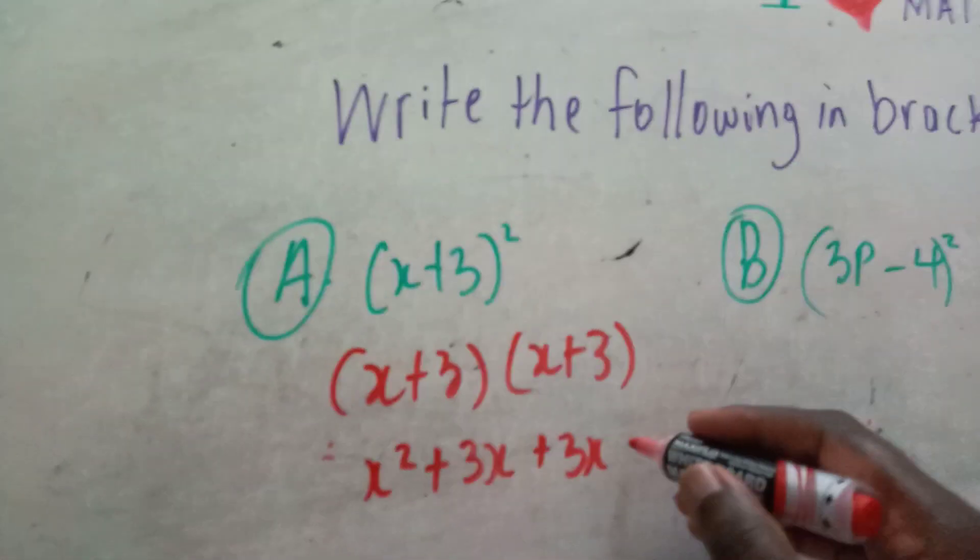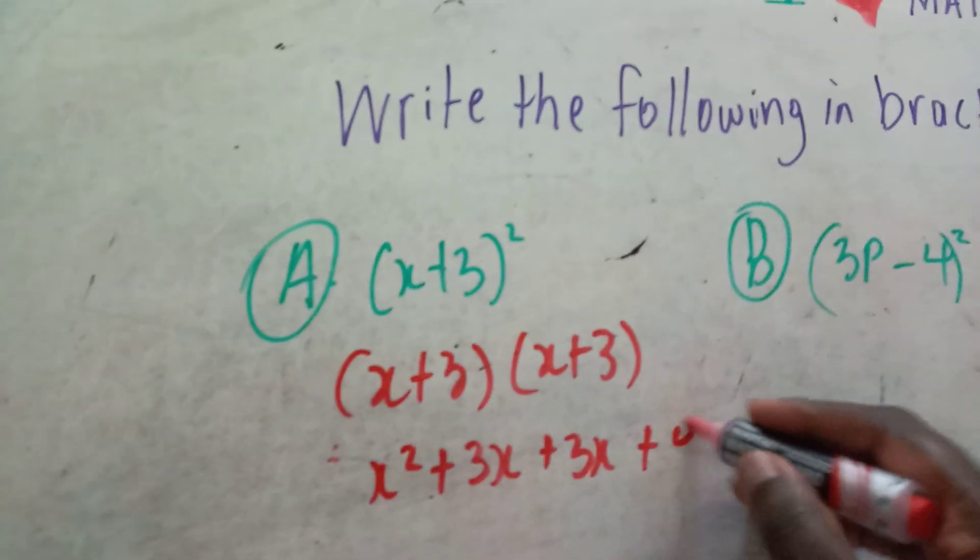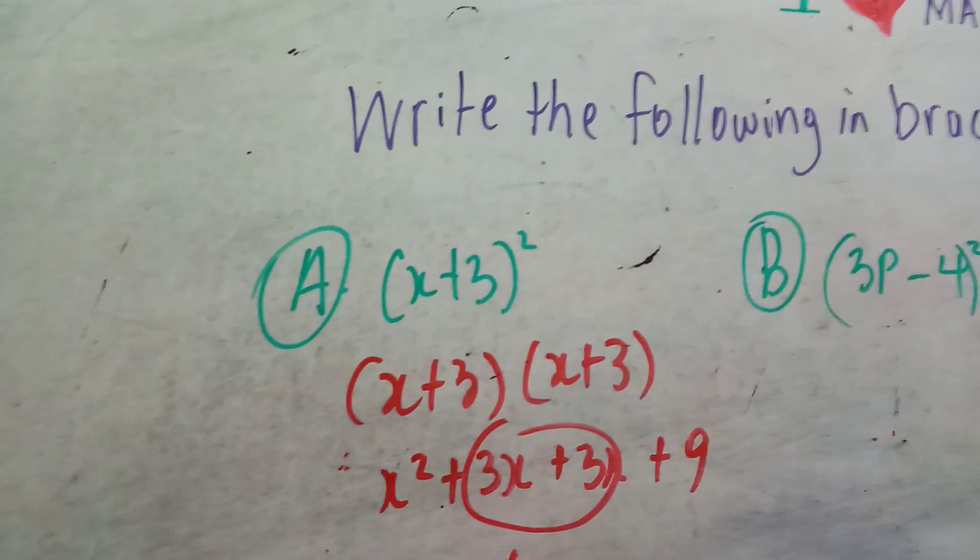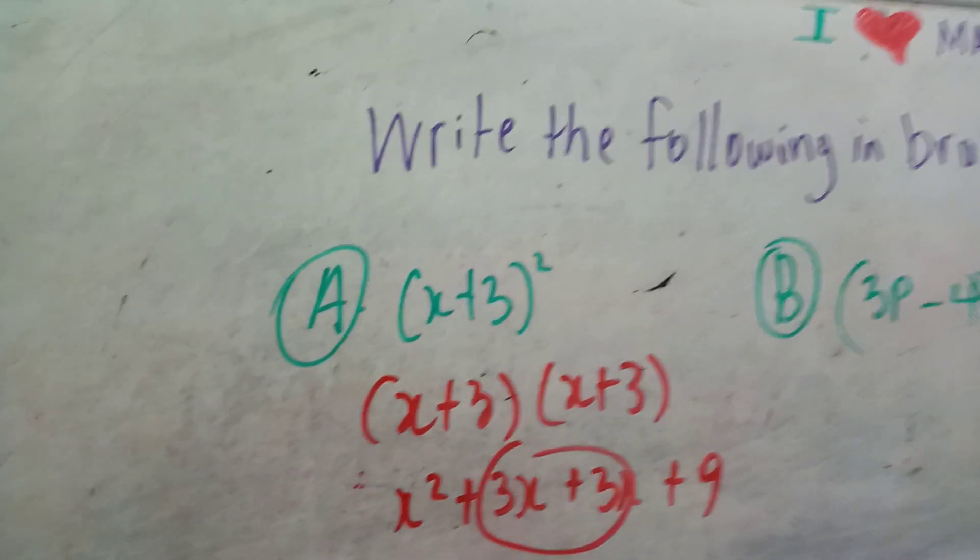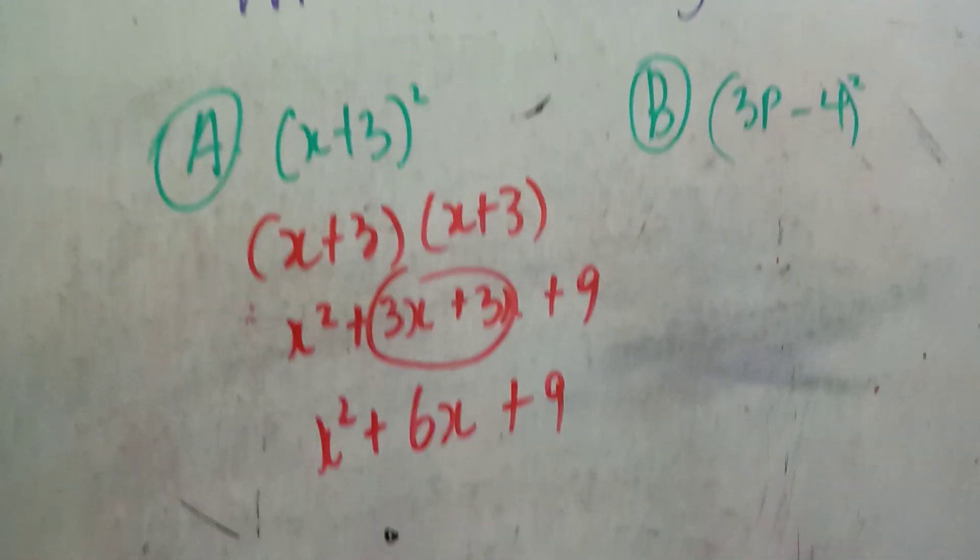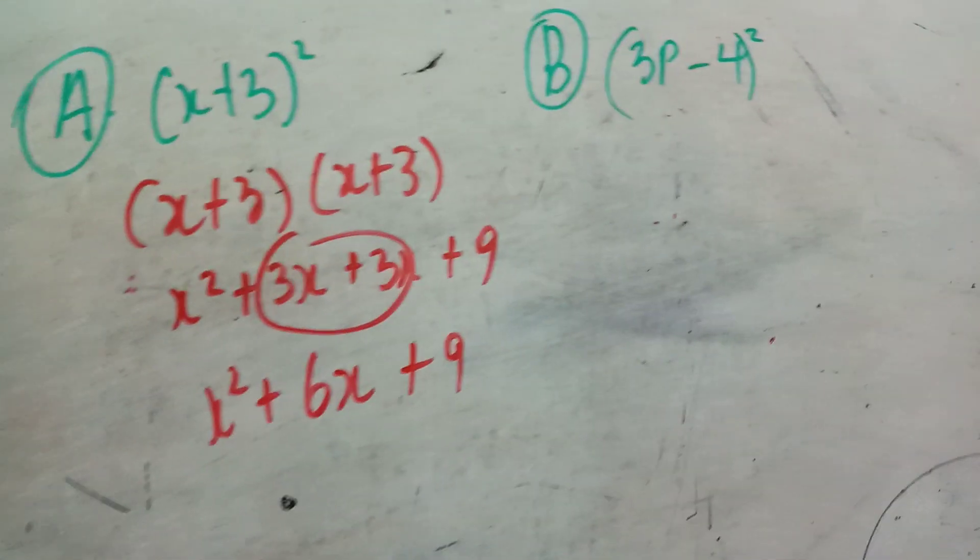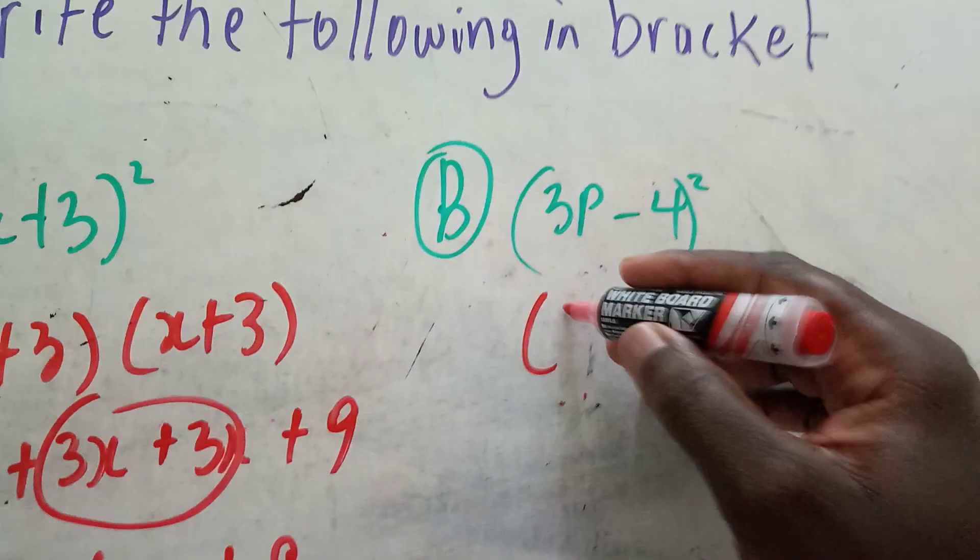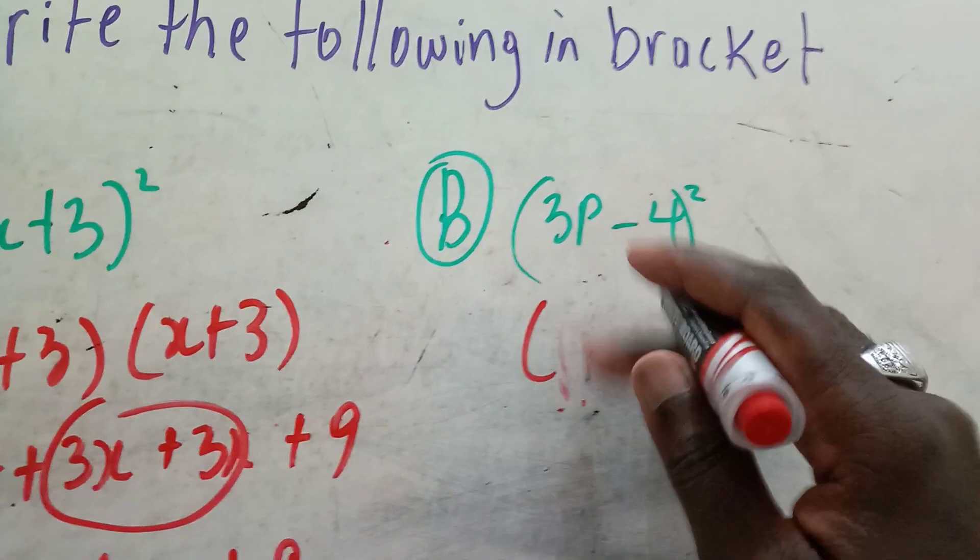Add like terms together - that gives you 6x. So x² + 6x + 9, and that would be our answer. What about this one? Same thing: (3p-4)².